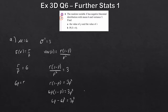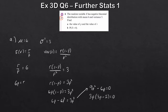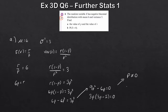Taking the 6p² across gives 9p² minus 6p equals 0. Factorising, we get 3p(3p − 2) = 0. Since p is a probability and can't be 0, we take 3p − 2 = 0, giving 3p = 2, so p equals 2 over 3.